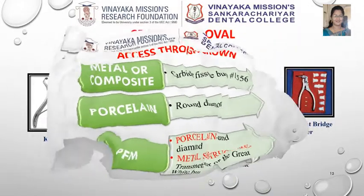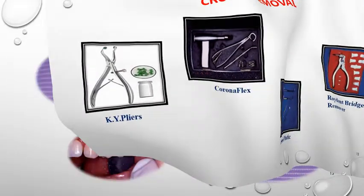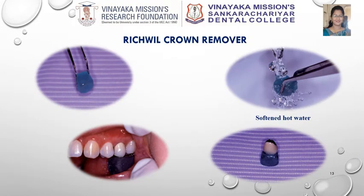If you decide to remove the crown, there are various kits available in the market like KY Pliers, Coronaflex, Royden Bridge Remover, Crown-O-Matic, and the Chirp, which aid in crown removal. Another method is a water-soluble resin softened using hot water. The patient bites on this resin and while releasing the bite, the crown adheres to the material and gets removed.